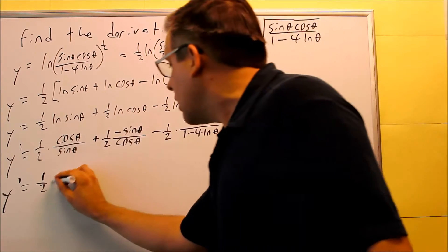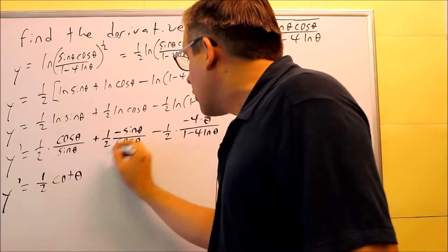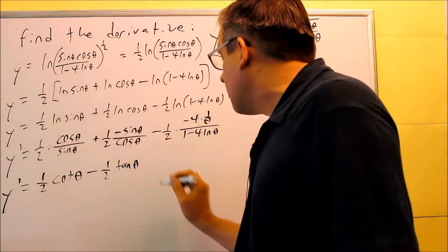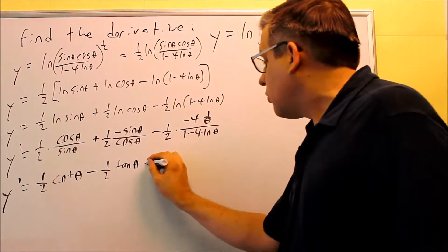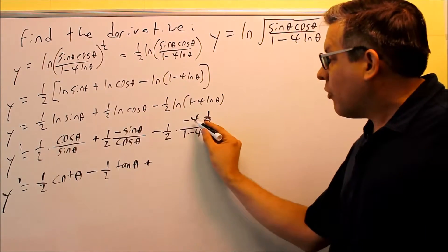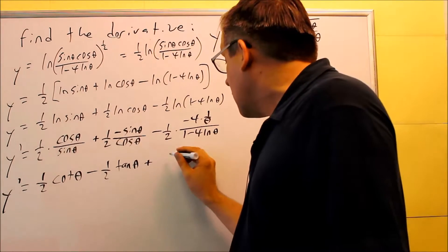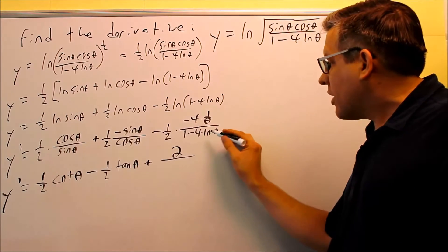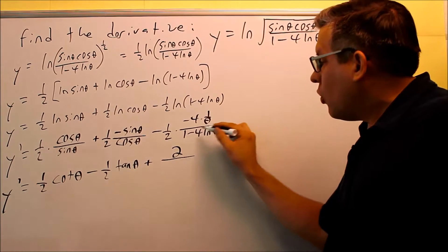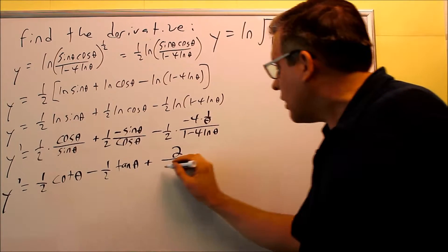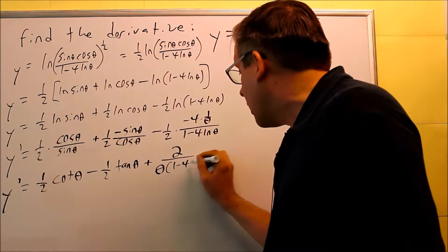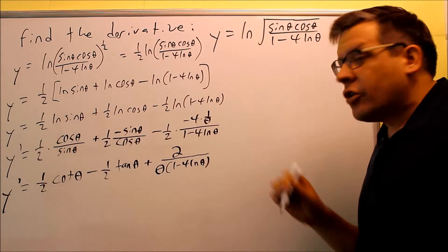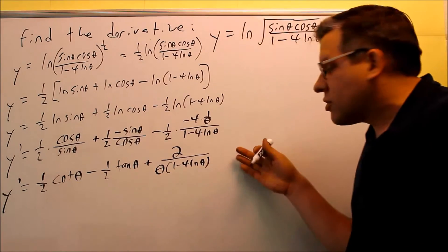Now we clean up. Cosine over sine can be written as cotangent theta. There's a minus on the next one — minus 1/2 — and sine over cosine is tangent theta. For the last term, negative times negative gives a plus. I have 4 divided by 2, which gives 2, and taking 1/θ divided by (1 − 4 ln θ), the theta ends up on the bottom, giving 2 over θ(1 − 4 ln θ). You don't need common denominators; this form is the final answer.